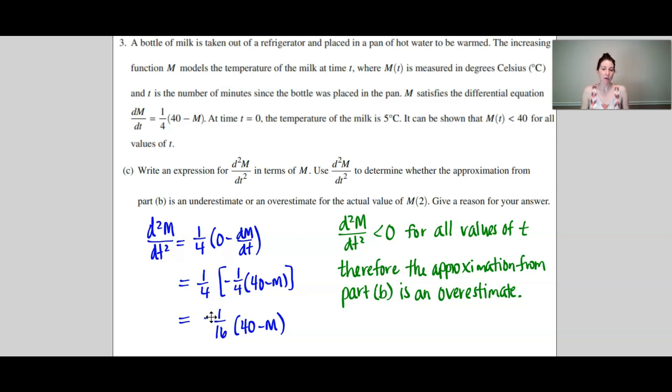So here we have a negative number out in front and we were told that M is always less than 40. So therefore this factor right here will always be positive times a negative number. So the second derivative will always be negative for all values of t. What that means is that M is concave down because the second derivative is negative.